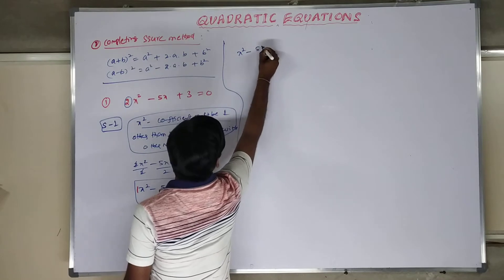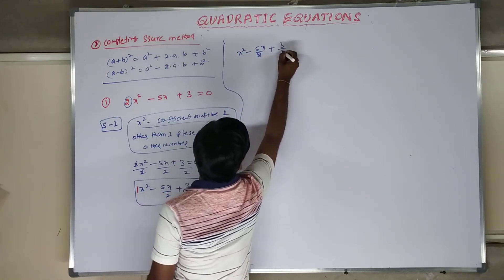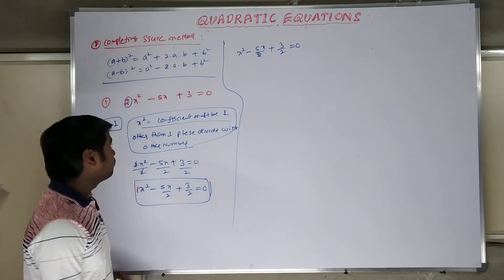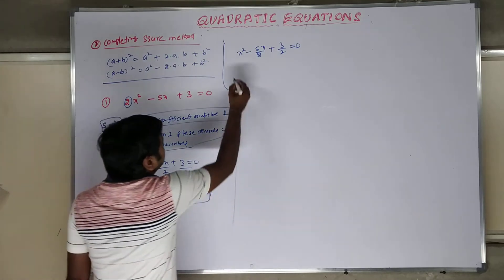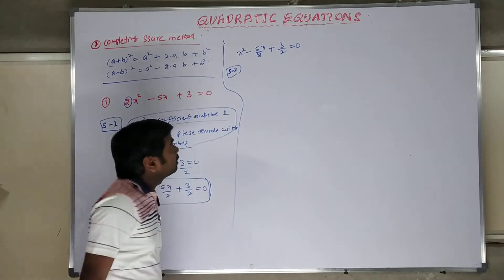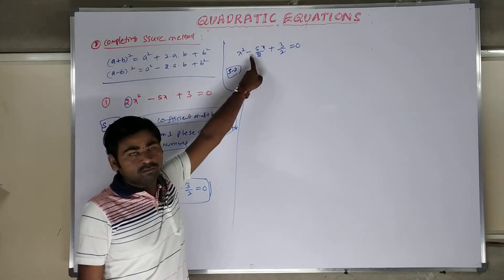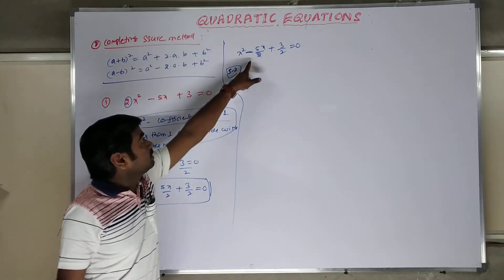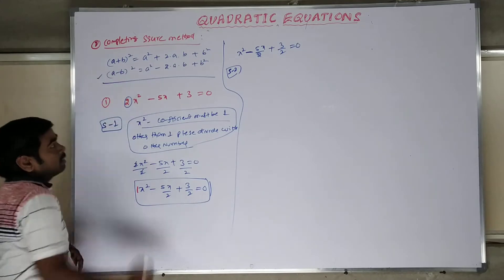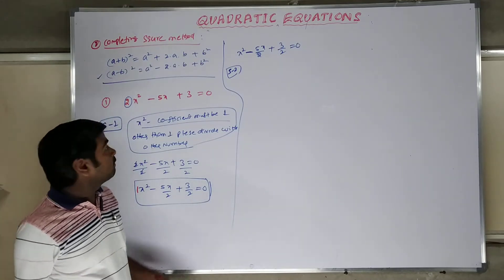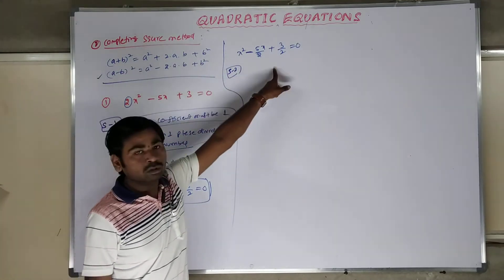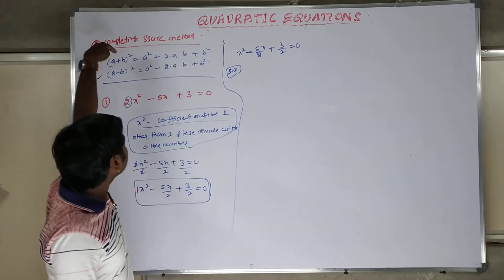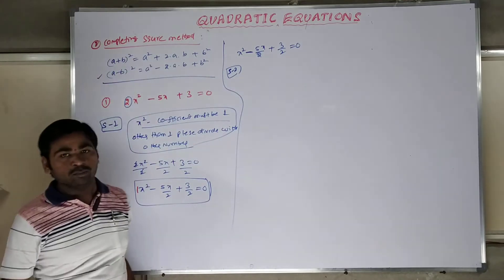Rewriting: x squared minus 5x/2 plus 3/2 equals 0. Step 2: whenever the middle term has a minus sign, this follows our A minus B formula — we are going to split the total equation in terms of A minus B whole square. If the middle term is plus, we apply the A plus B whole square formula.